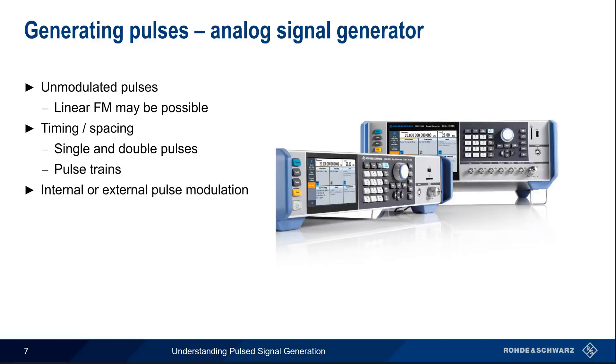And as you might expect, pulses from an analog signal generator usually have excellent spectral purity. If you're looking for very rectangular pulses, an analog signal generator is usually the best choice.